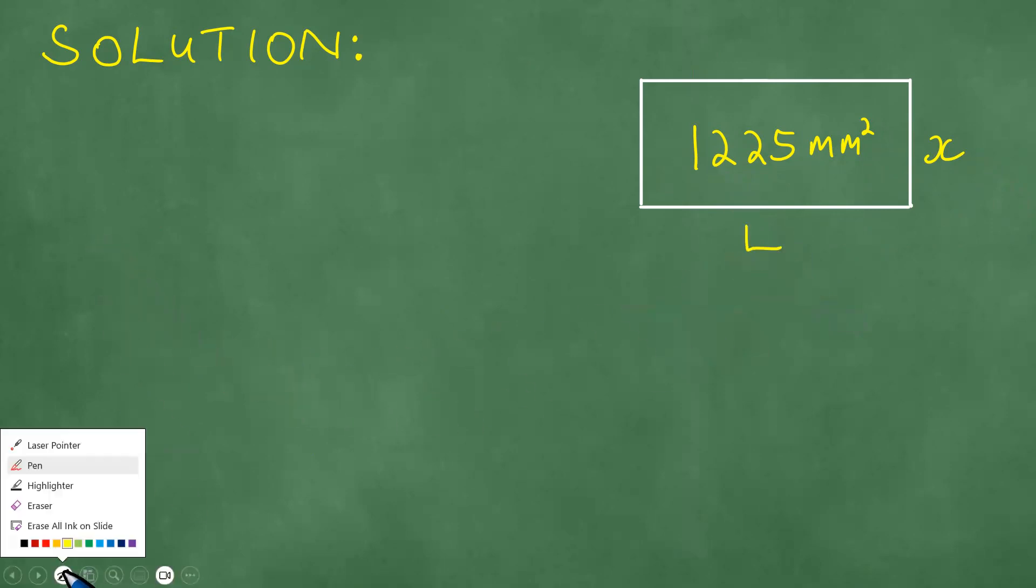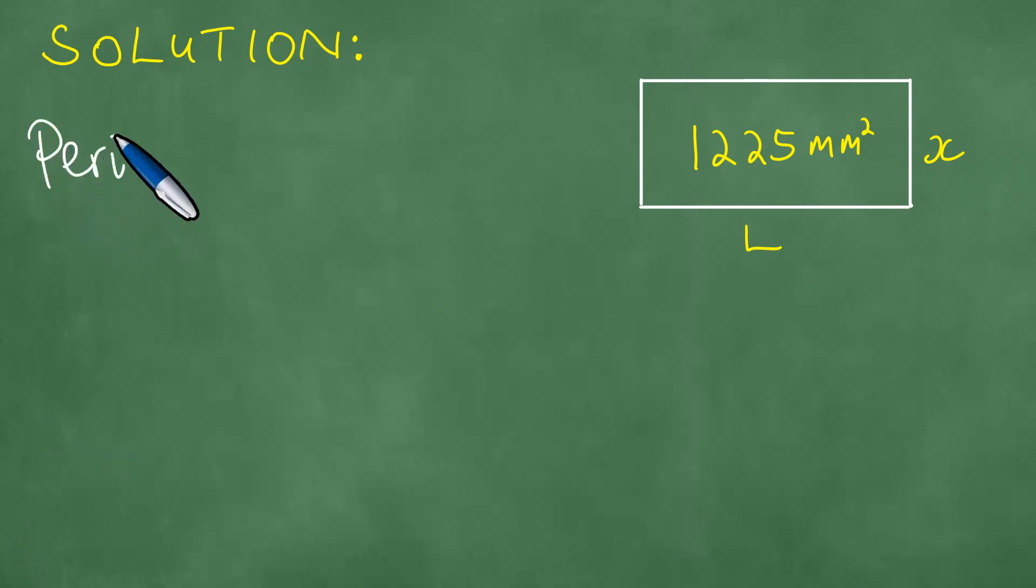A couple of things we need to determine here. Because the length of the wire is known, we can determine the perimeter of this rectangle. What is the perimeter of this rectangle? It is twice x plus twice L equals 500.